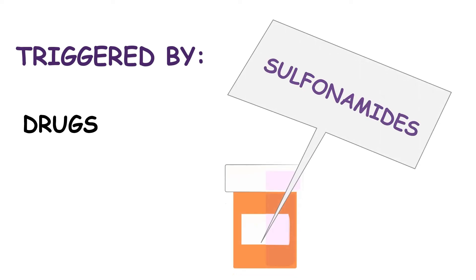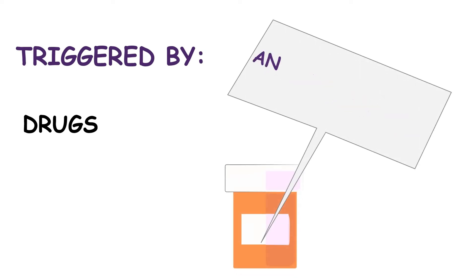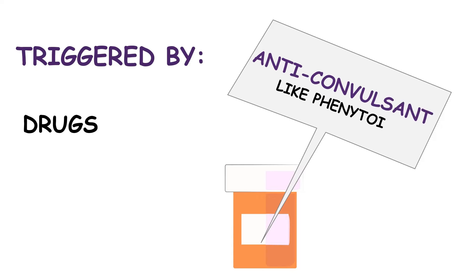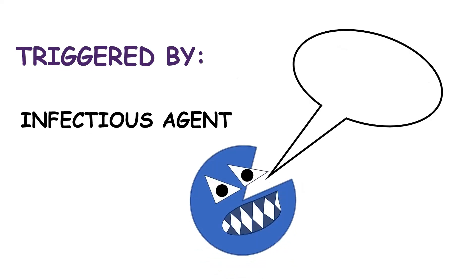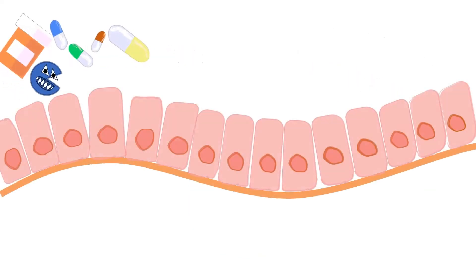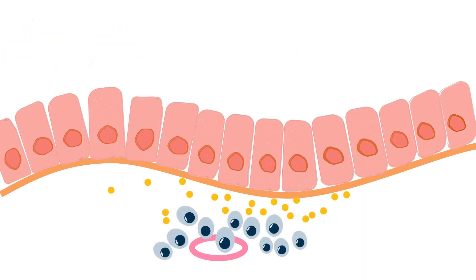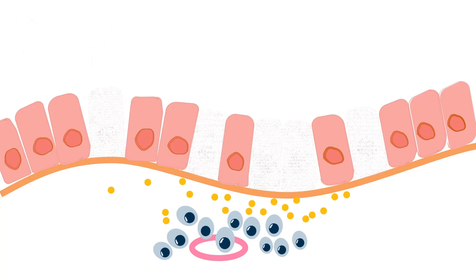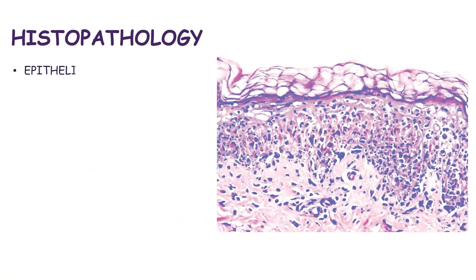Triggers include drugs like sulfonamides, NSAIDs, barbiturates, and anticonvulsants like phenytoin, along with infectious agents like herpes simplex virus, histoplasmosis, and Mycoplasma. These triggers cause lymphocytic and macrophage recruitment, resulting in basal and parabasal macrophage infiltrate in the perivascular space, along with a characteristic vasculitis and lymphocytic infiltrate in the perivascular space.